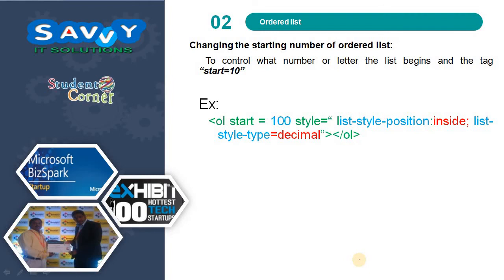Next is changing the starting number of an ordered list. To control what number or letter the list begins at, we use the start attribute. For example, setting list-style-position and list-style-type along with start at 100 makes the list begin at 100, 101, 102, 103.